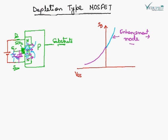And here the current is decreasing. Therefore, we say that the depletion type MOSFET is working in depletion mode. So a depletion type MOSFET can work in both the modes, enhancement mode as well as in depletion mode.